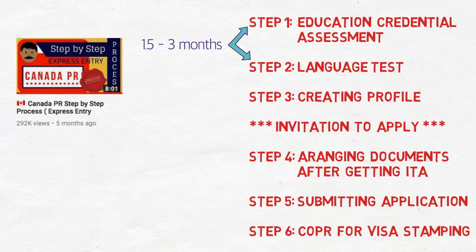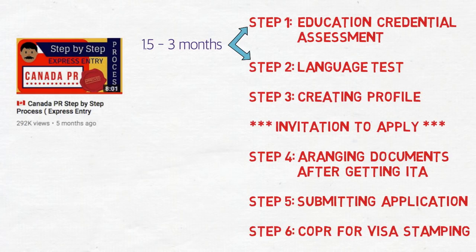If you clear IELTS in the first attempt, you'd prepare for about a month, and results take 15 days. But if you don't get the required CLB for a good CRS score, you'd need to retake it, adding another 1.5 months. So generally it takes a minimum of 1.5 months to a maximum of 3 months. Similarly for ECA, going through WES takes about 3 months, while other agencies like IQAS can take 4 months or more, with courier time adding another 15 days.